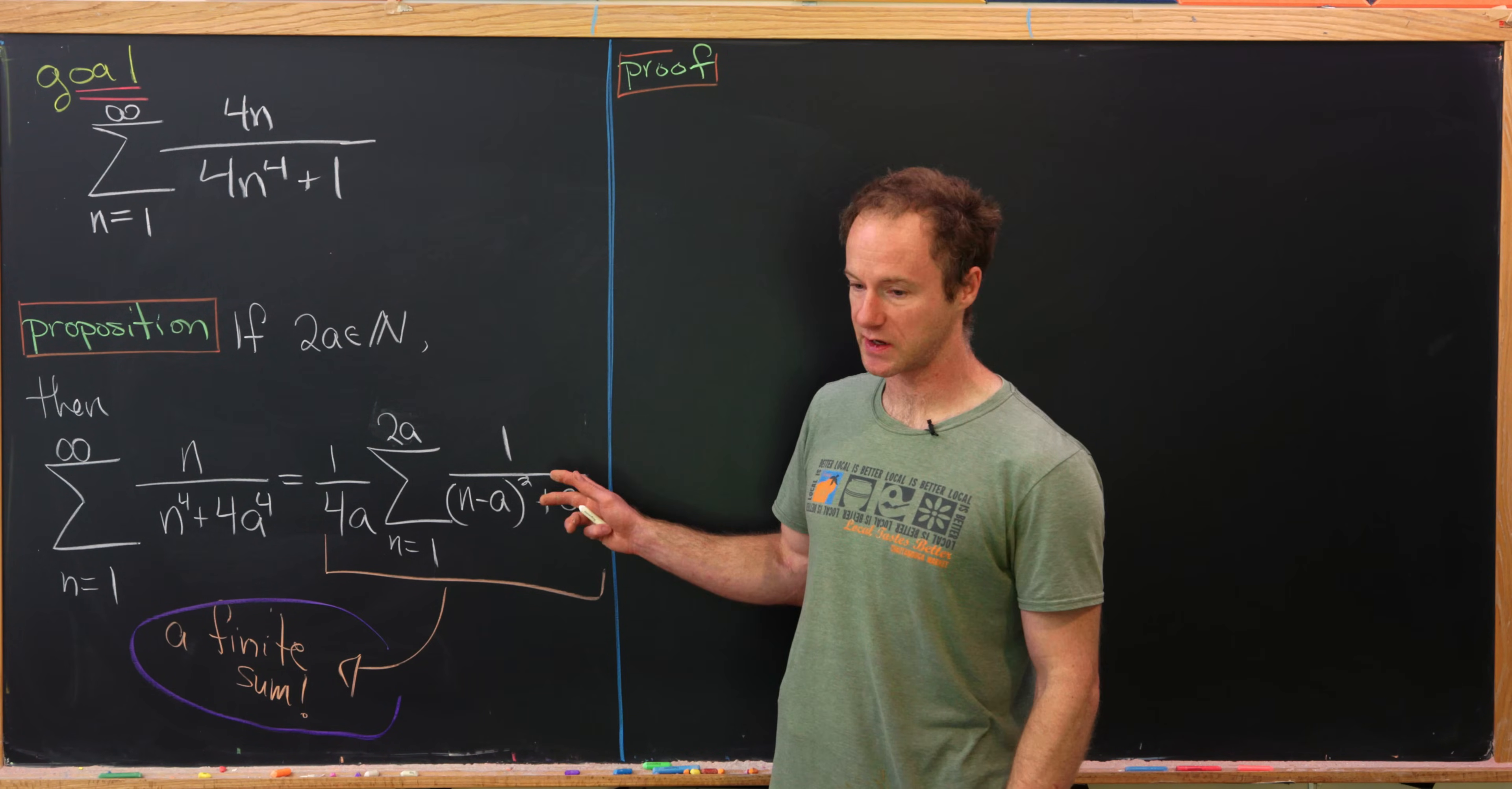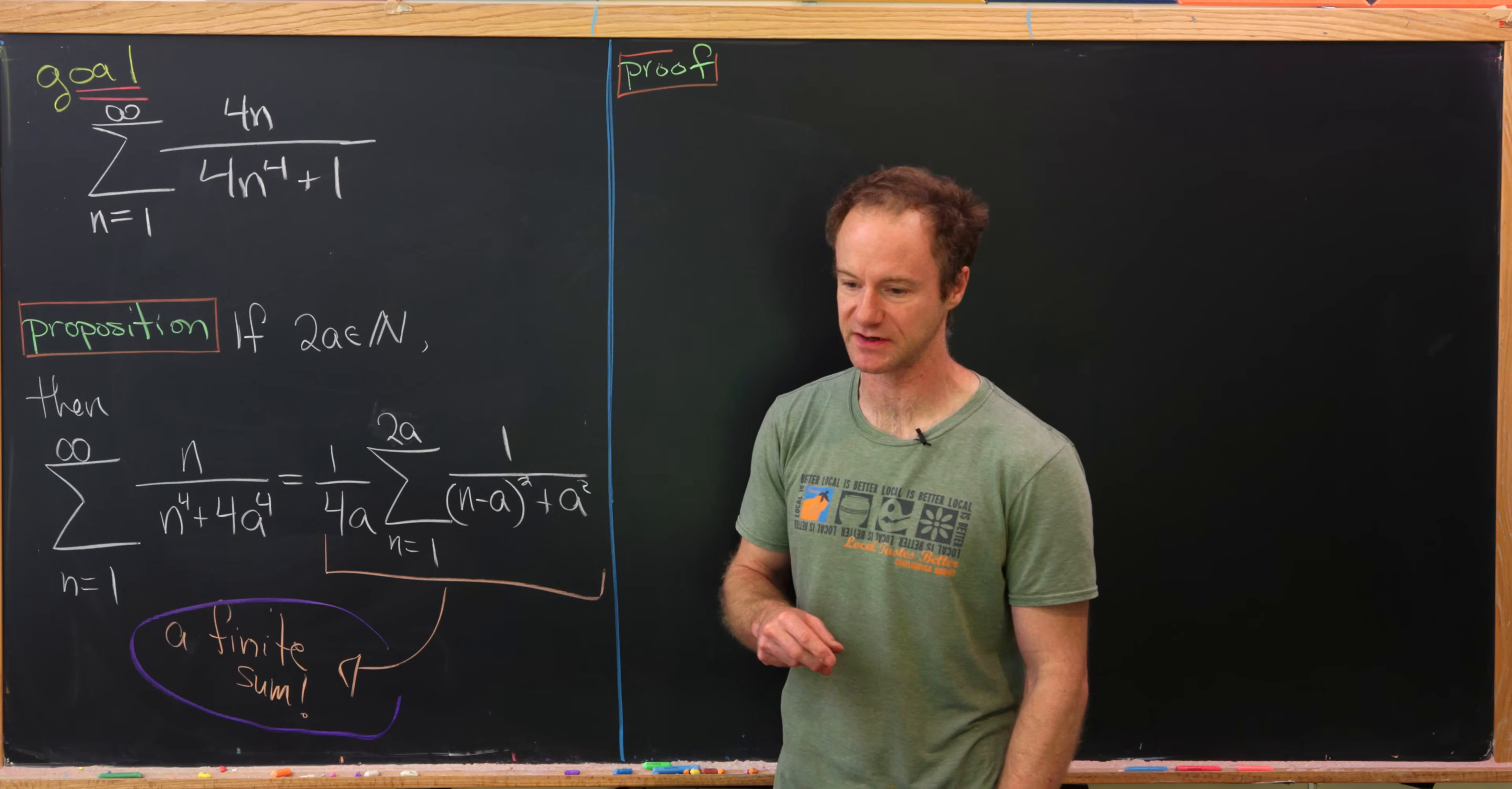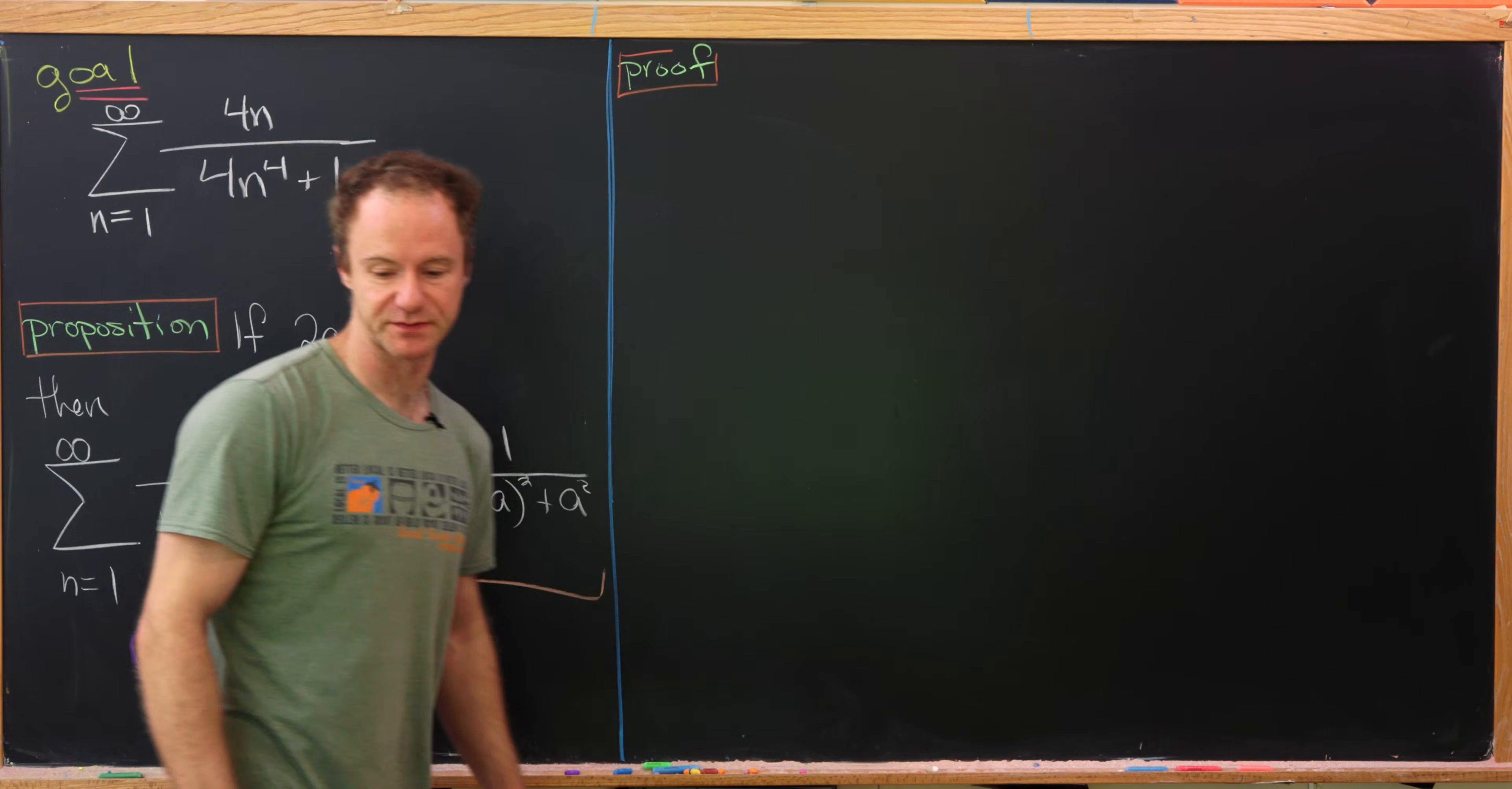So check out what's going on here. We've somehow collapsed this infinite sum into a finite sum, and that's kind of where all the magic happens here. Now I think pretty clearly we can rewrite this in the form of something on the left-hand side, but we'll hold off until we're at the end here. So let's look at the proof of this proposition.